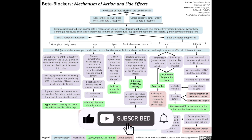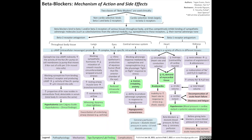When talking about beta blockers, it's important to understand that we use two classes of beta blockers clinically. The first class are non-cardioselective — they bind beta 1 and beta 2 receptors. The second class is cardioselective beta blockers that bind largely to beta 1 receptors.